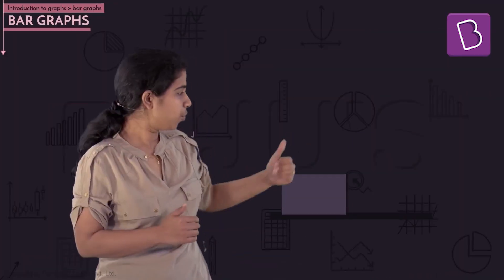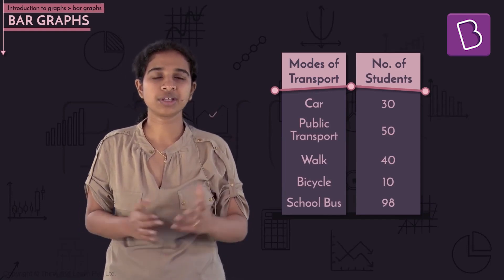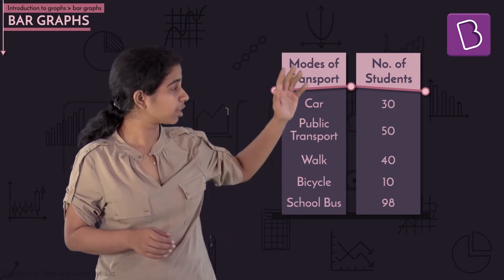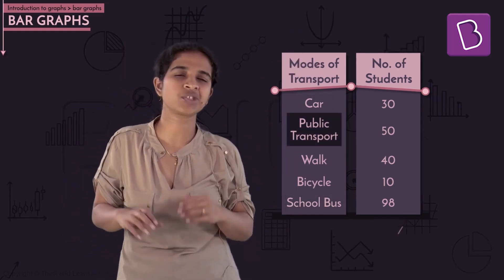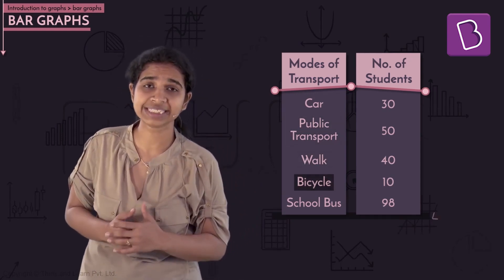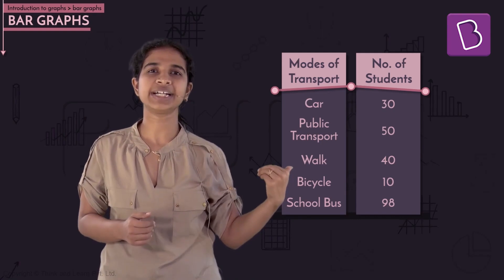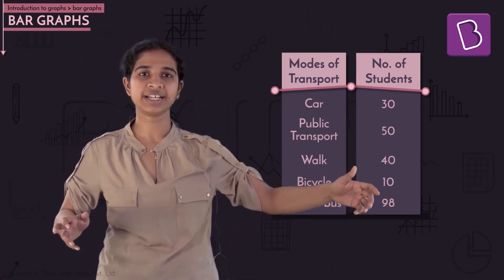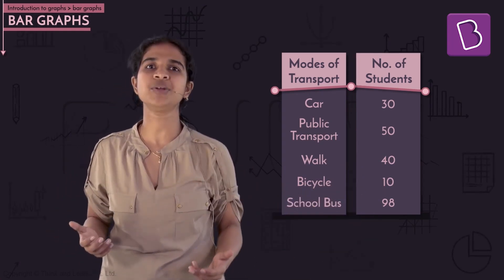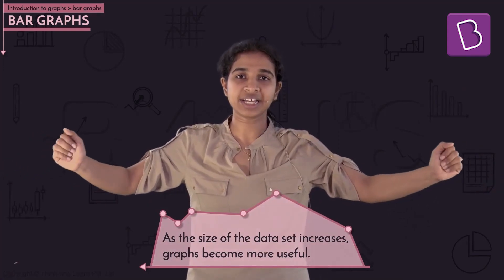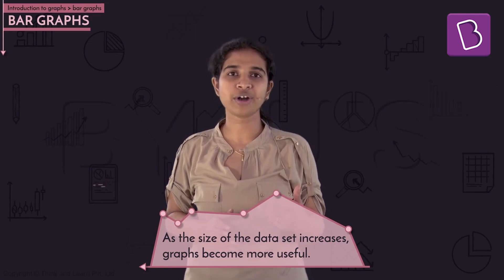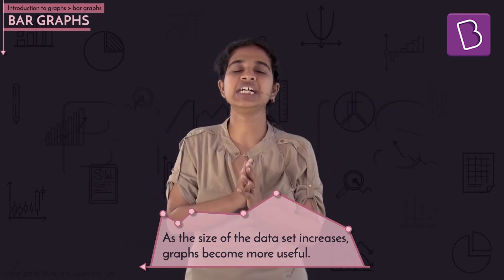Now take another dataset: the different modes of transport students use to get to school — car, school bus, public transport, walking, or bicycle. Again, we want to compare five different quantities. As the size of your dataset increases, graphs become more and more useful because it gets increasingly difficult to make sense of large data in a table. A graph takes a large dataset and puts it in a form that is much easier to understand.